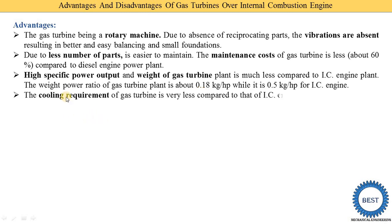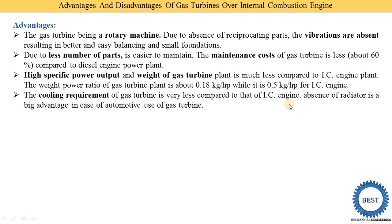The cooling requirement of a gas turbine is very less compared to the IC engine. The absence of a radiator is a significant advantage for automotive use of gas turbines. For example, if we use a gas turbine in an automobile vehicle instead of an IC engine, no radiator is required, reducing cost.